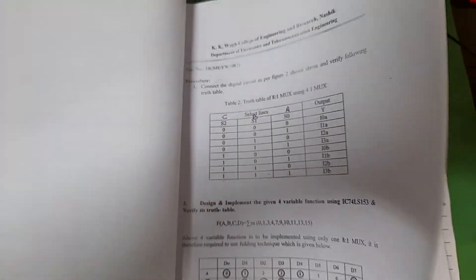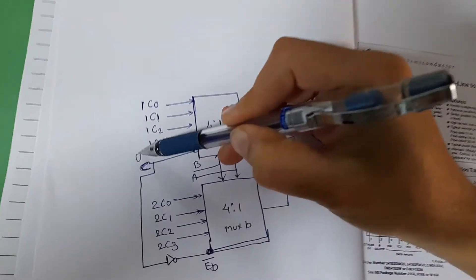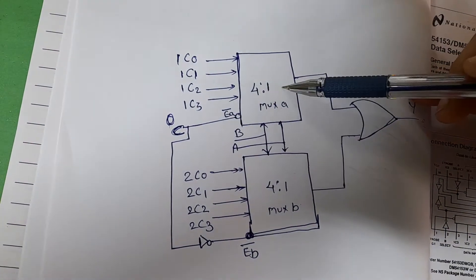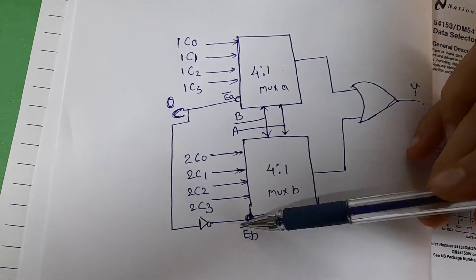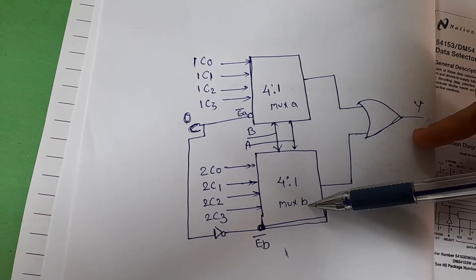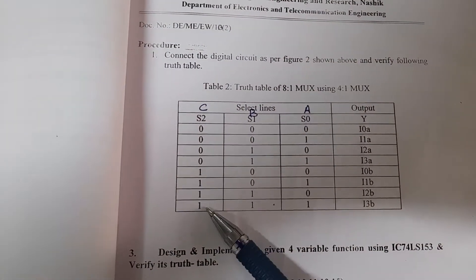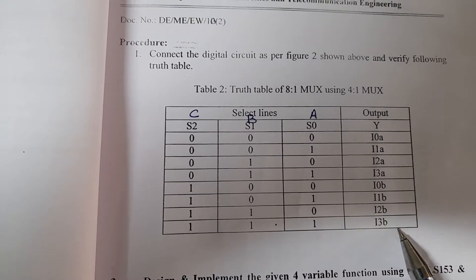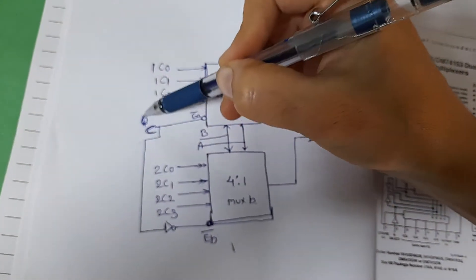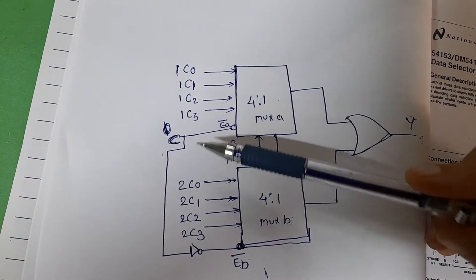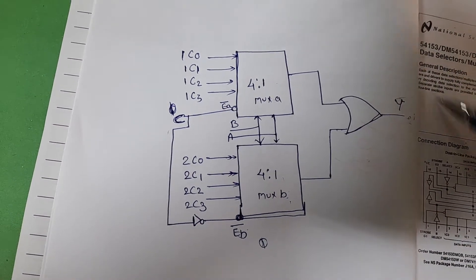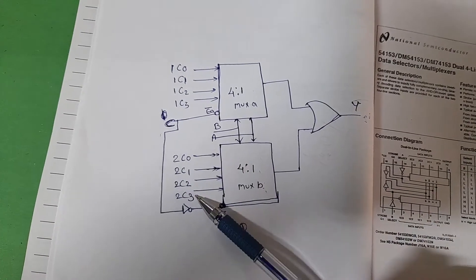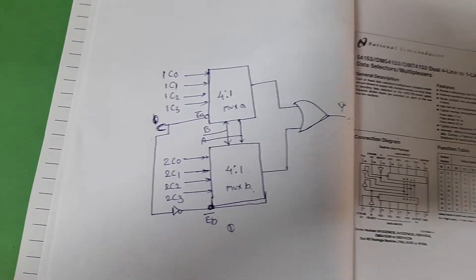In the circuit diagram, whenever the first enable input is 0, Mux A is activated and these 4 inputs appear at the output. At that time, since enable input is 0, EB-bar becomes 1 and Mux B is deactivated. For the next 4 conditions, whenever S2 is 1, the second Mux B is selected. When this input is 1, Mux A is deactivated, EB-bar becomes 0, and Mux B is activated. The final output is based on these 2 select lines.